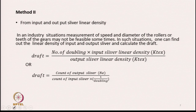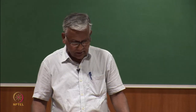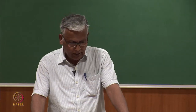If the linear density is expressed in hank (English system), the draft is given by: draft = (count of output sliver in Ne) / (count of input sliver in Ne × 1/doubling). Depending on the units, we follow either the kilotex ratio or this English-unit ratio to find the actual draft.